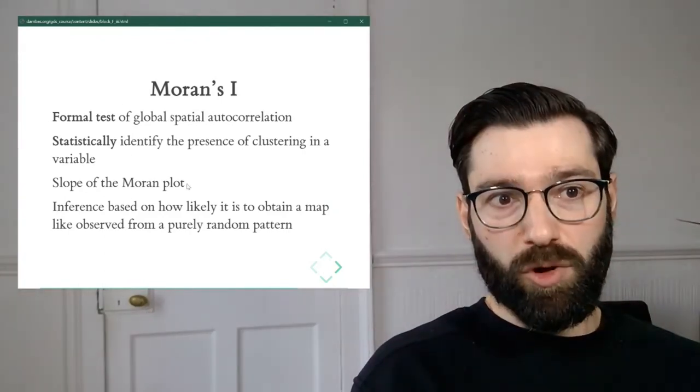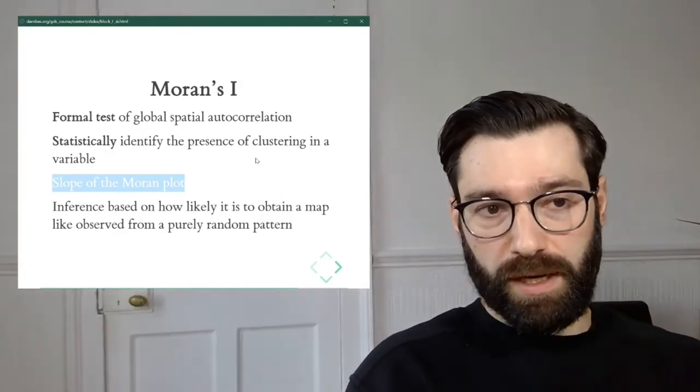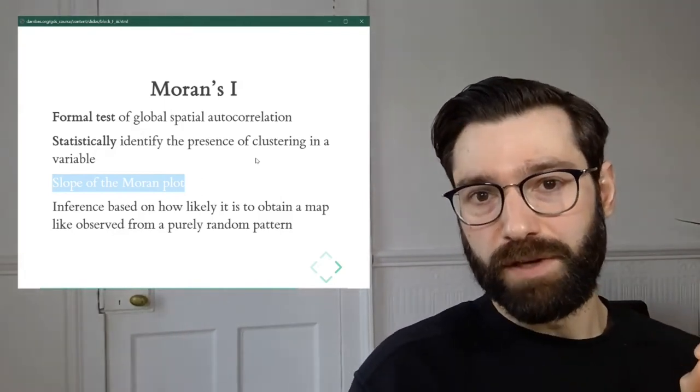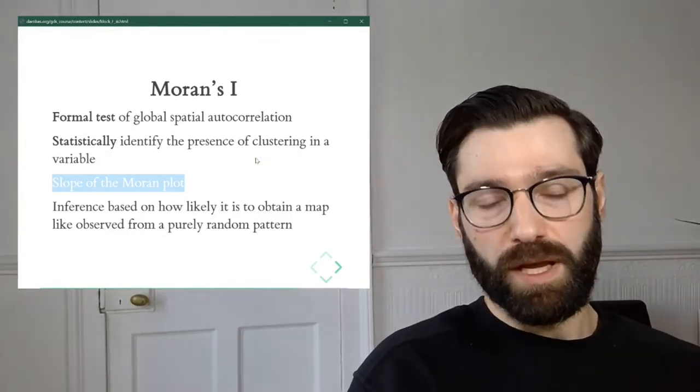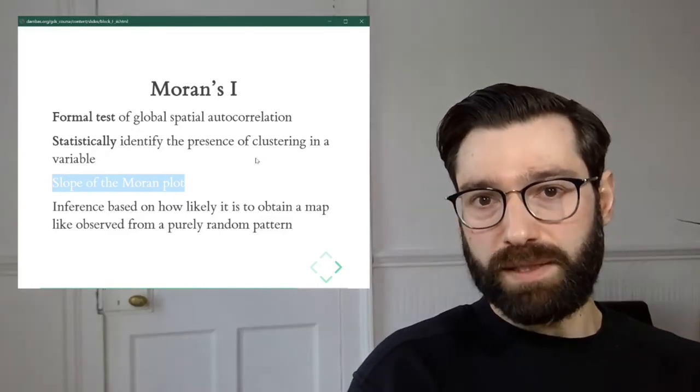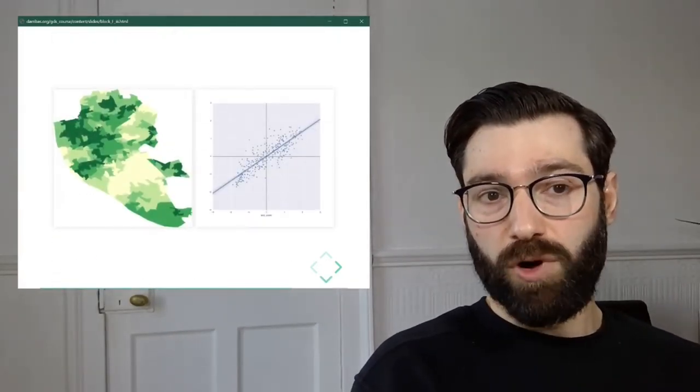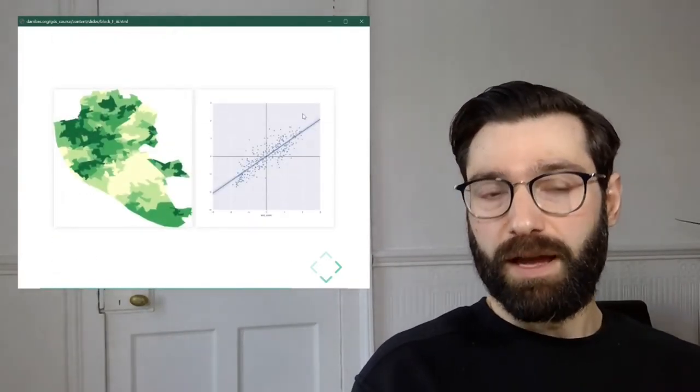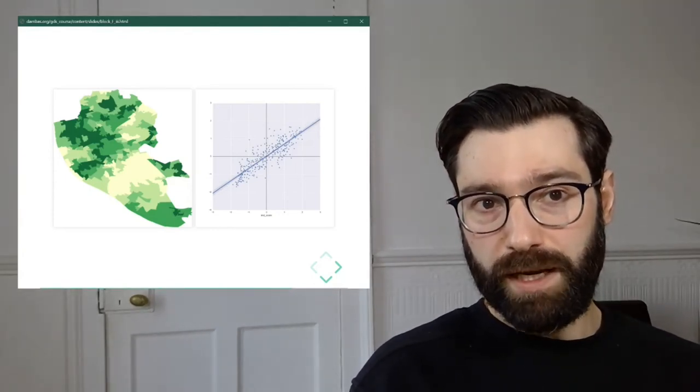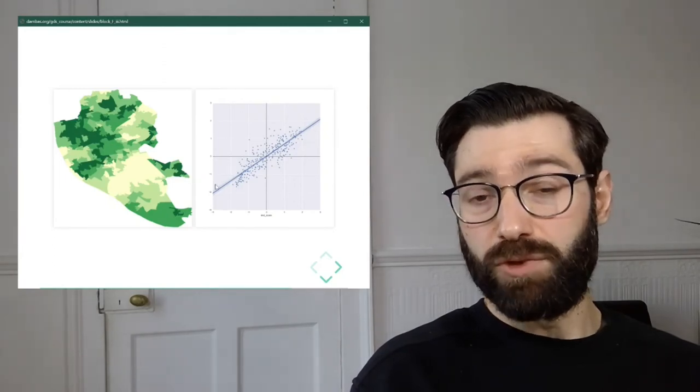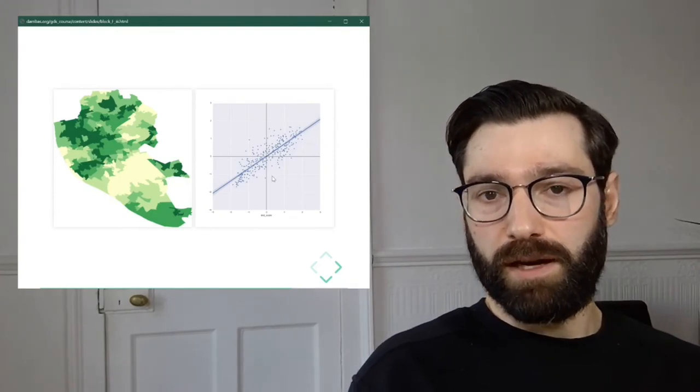The link with the Moran plot comes here. Even though it has an equation that I'm going to skip for the sake of simplicity, the key here is that there is a connection between Moran's I, the statistic, and the Moran plot, which is a graphic device. The statistic Moran's I is the slope or the inclination of this line, which is the best line of fit for the scatter plot of the Moran plot.